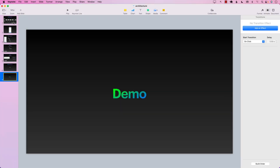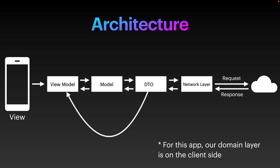Once the DTO gets the data from the network layer, the DTO can skip the domain model and simply pass the data directly to the view model — that is perfectly fine. If there is no business logic to apply and we just need to display the data, we can pass it straight to the view model. However, if we need to apply rules and regulations to the data, then we need to pass it through the domain model layer. It really depends on the scenario.